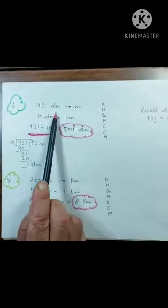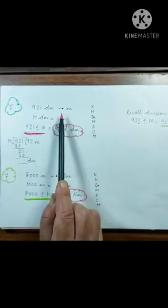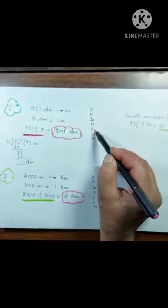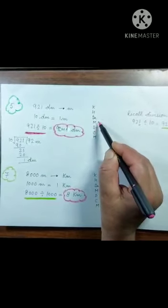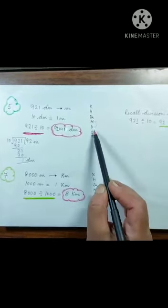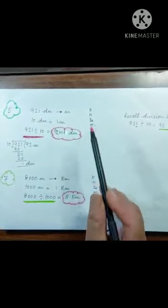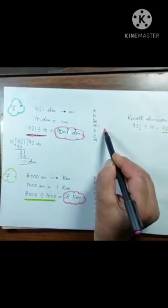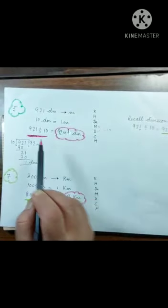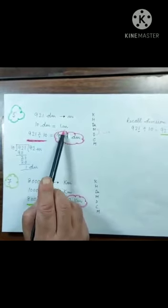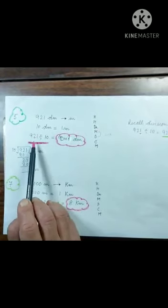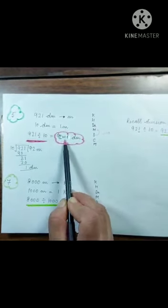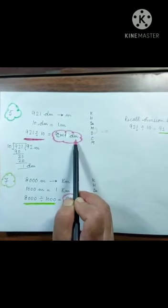921 decimeters — convert to meters. Decimeter is given, going to meter — smaller to bigger, one step up. Divide by 10. Ten decimeters equals one meter. 921 divided by 10 equals 92 meters and 1 decimeter.